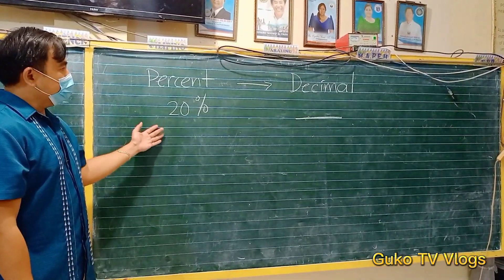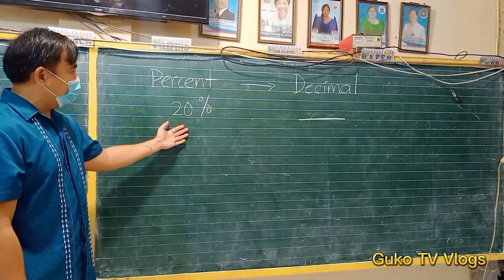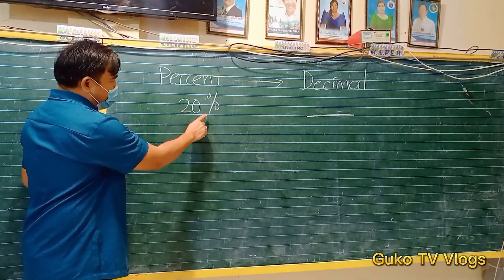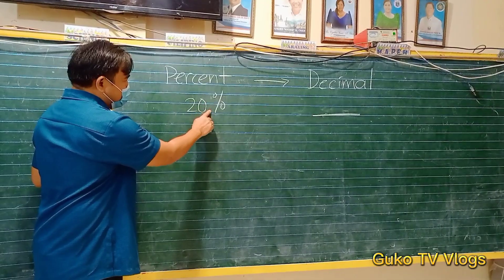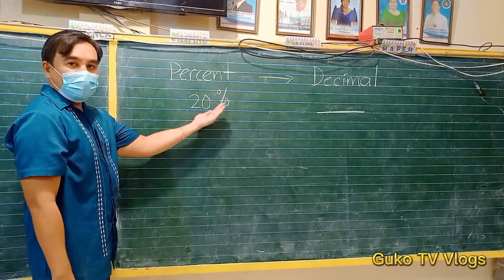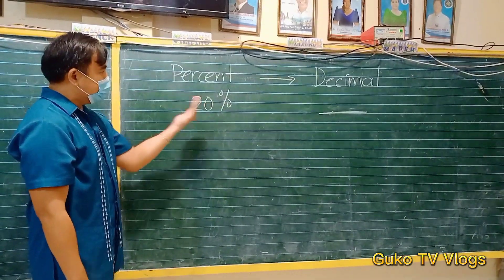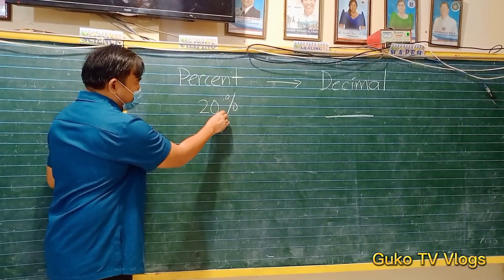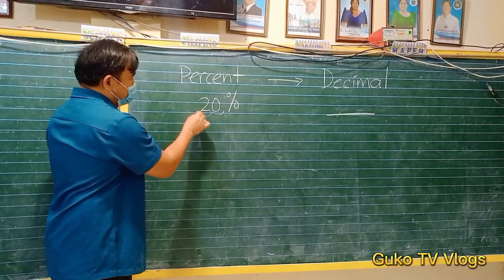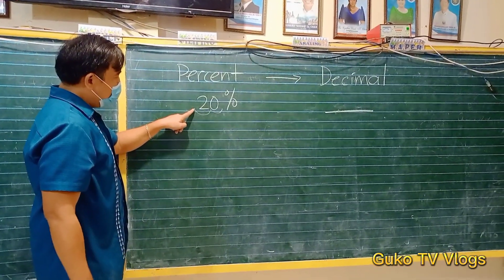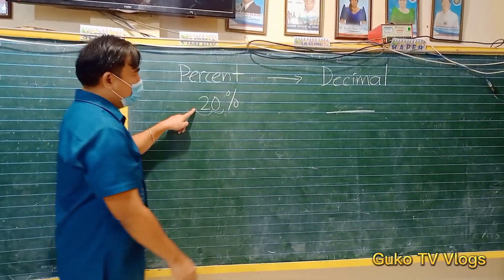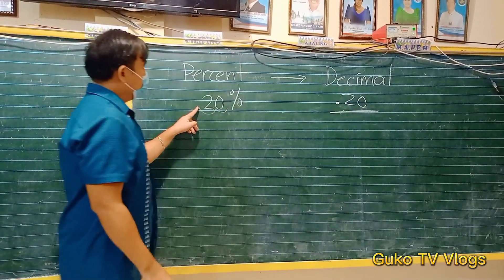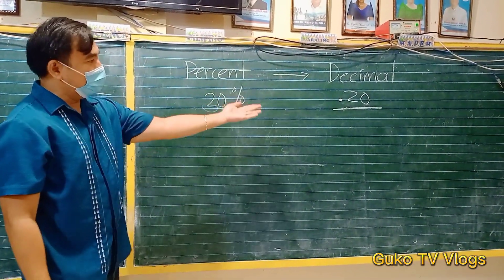We can also use the shortcut method. So we have 20 percent — this is a whole number, so the decimal point is on the right side. We just move two places going to the left. If the decimal point is here, just move it: 1 and 2. So the decimal place will be here, and this becomes 0.20. So 20 percent in decimal is 0.20.